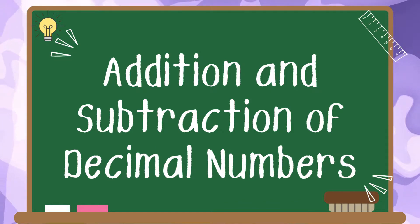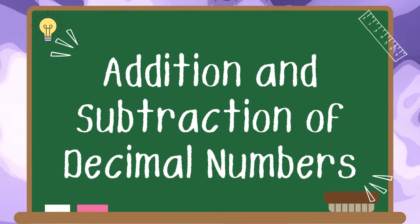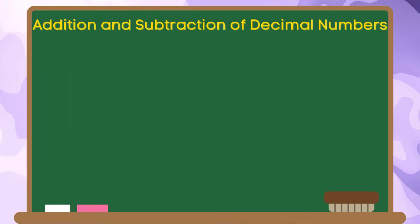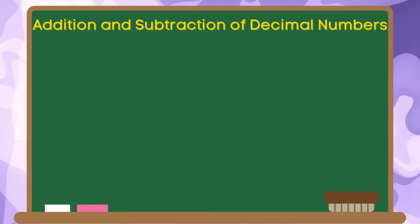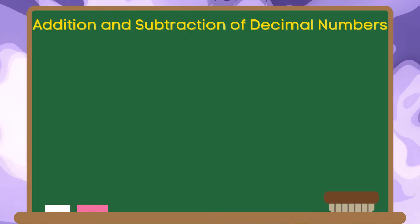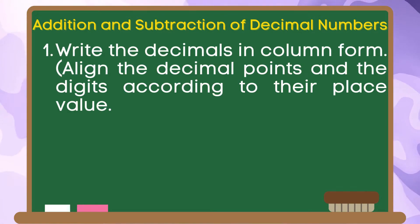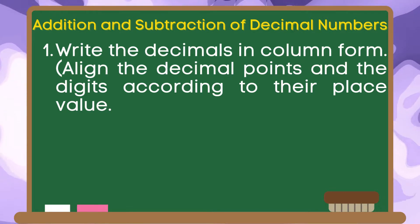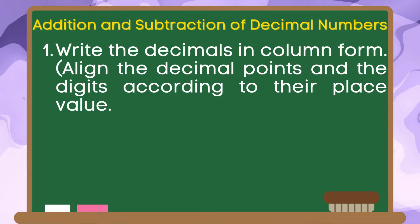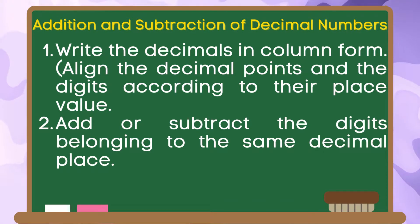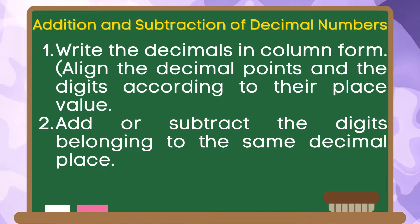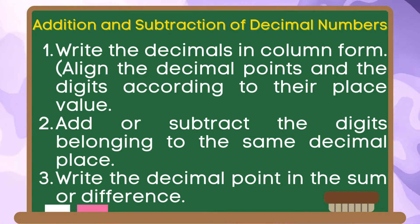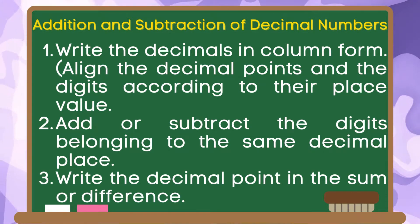In this video, you are going to learn how to add and subtract decimal numbers. For us to add or subtract decimal numbers, here are the steps to follow. First, write the decimals in column form. Remember to align the decimal points and the digits according to their place value. Second, add or subtract the digits belonging to the same decimal place. And lastly, write the decimal point in the sum or difference.